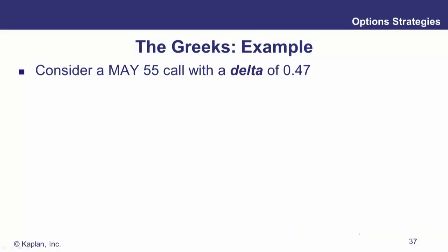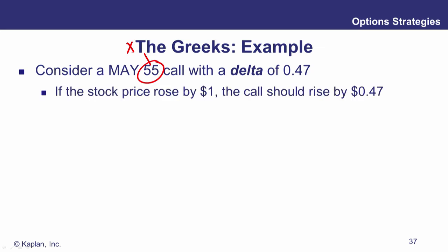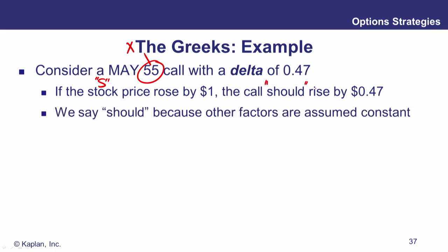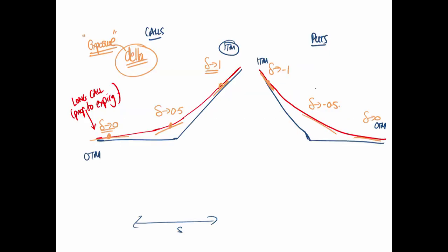Here's an example: a May 55 call — strike or exercise price 55 — with a delta of 0.47. You can interpret that as your exposure. If the underlying S rises by a dollar, the call should rise by approximately 0.47.